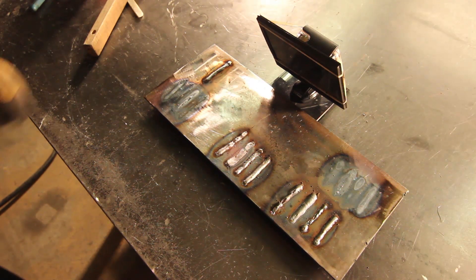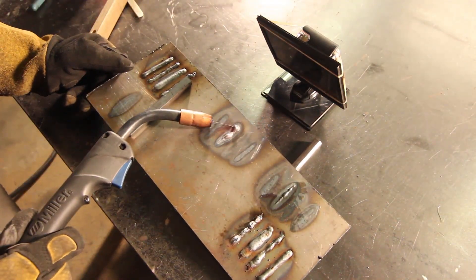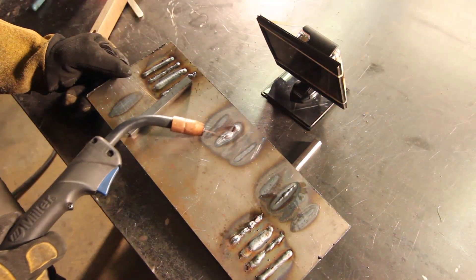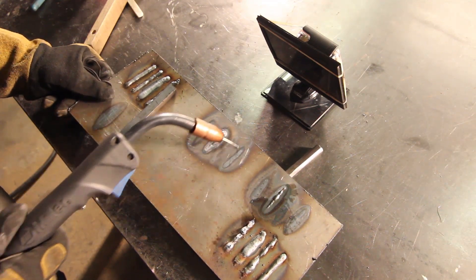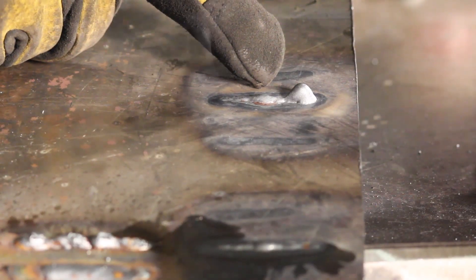Now as you can see, when I flip over the sheet of steel, there's too much penetration. You got too much material coming through to the opposite side. This makes for a very weak weld.